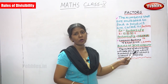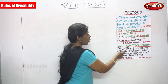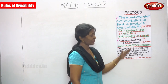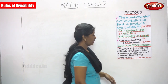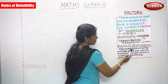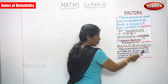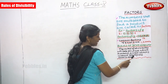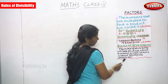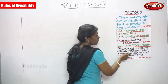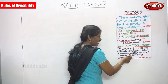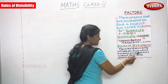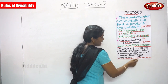Next we are going to see rules of divisibility. These are the division rules called rules of divisibility. The rules of divisibility will help you find which numbers divide others without leaving any remainder.